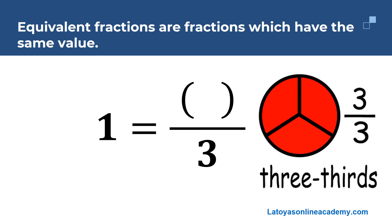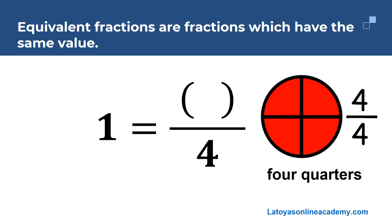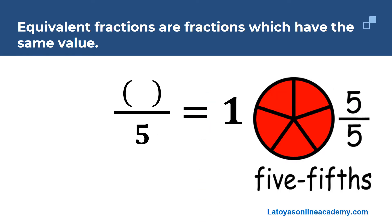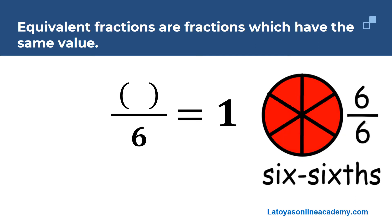Here we have one whole is equal to something over three. One whole is the same as three over three. One whole is equal to something over four. One whole is the same as four over four. Something over five is equal to one whole — five over five is equal to one whole. Something over six is equal to one whole — six over six is equal to one whole.